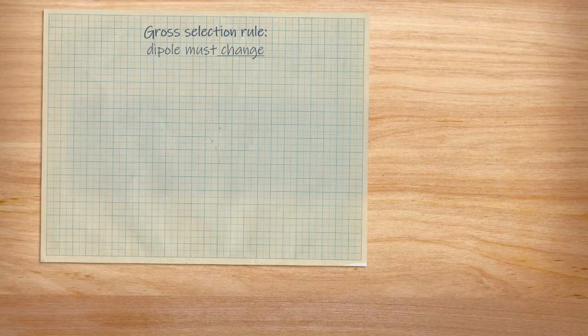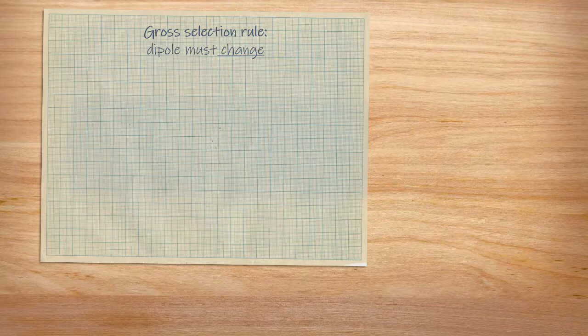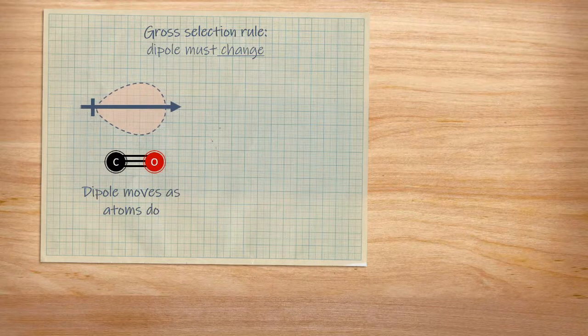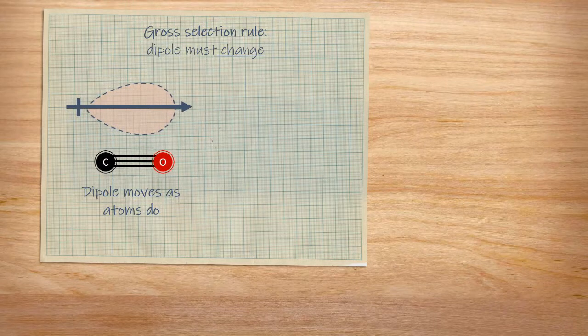This is a very different consideration to rotational spectroscopy where the dipole must be permanent. In a heteronuclear diatomic molecule, it's quite easy to see that the dipole would change. There's only one bond to change and it stretches and changes that dipole moment.